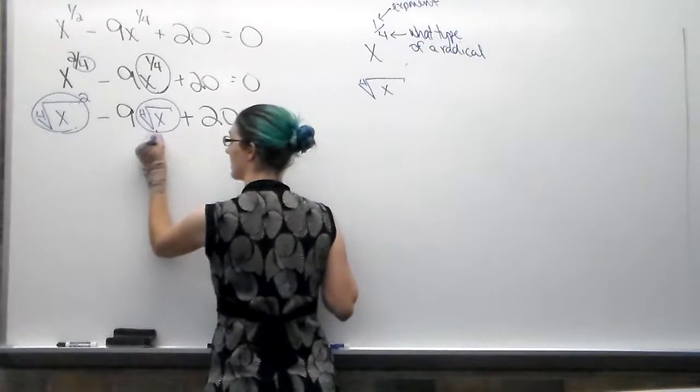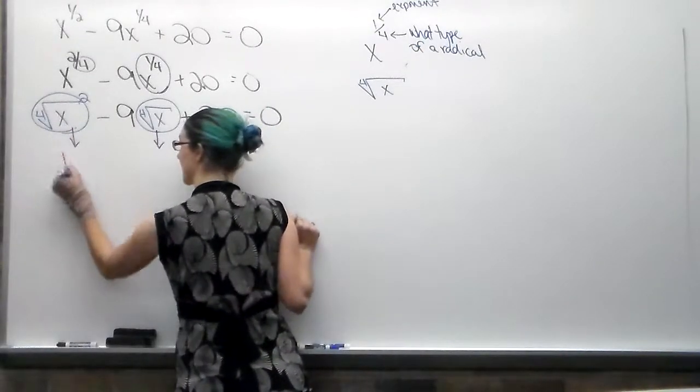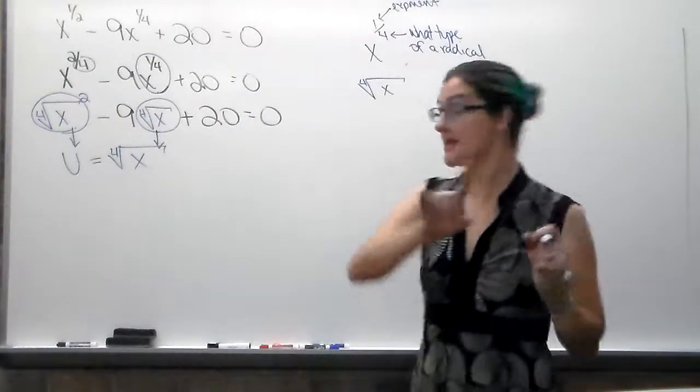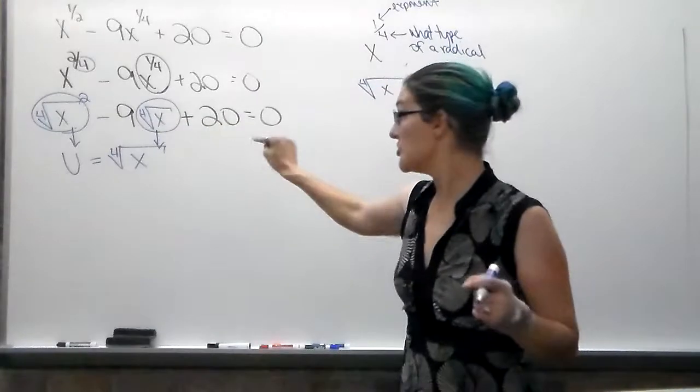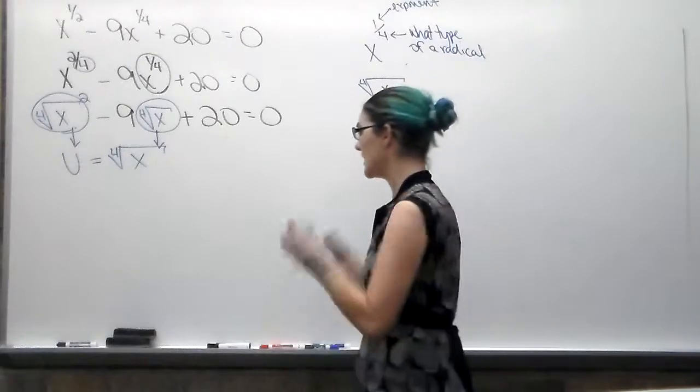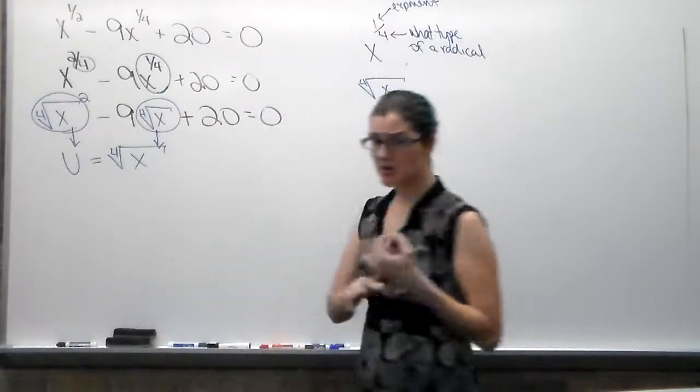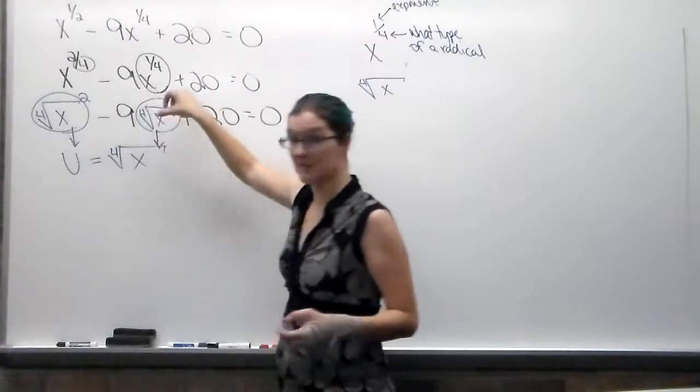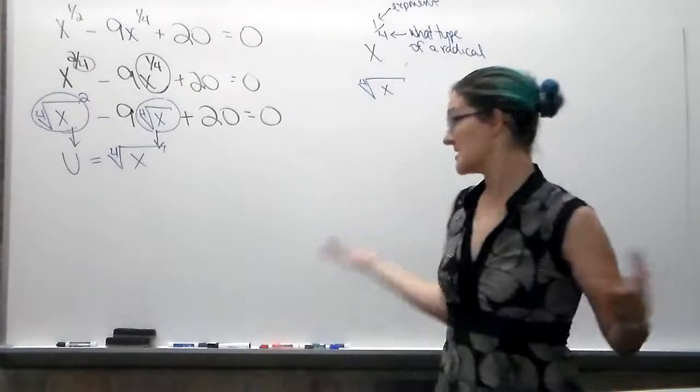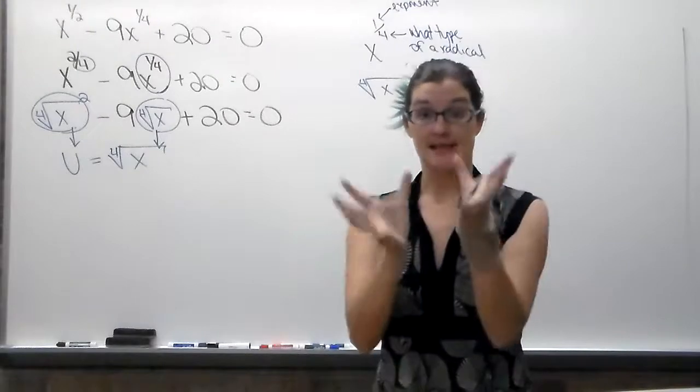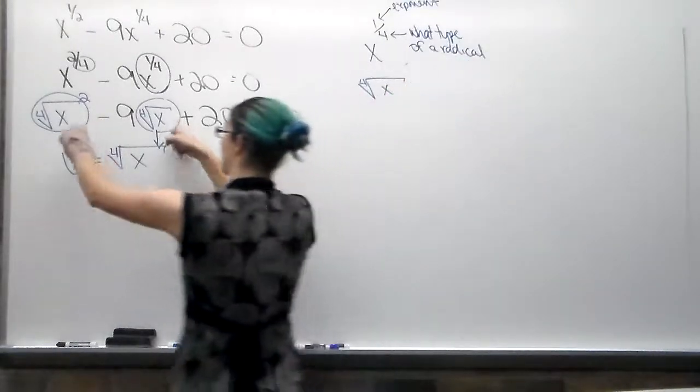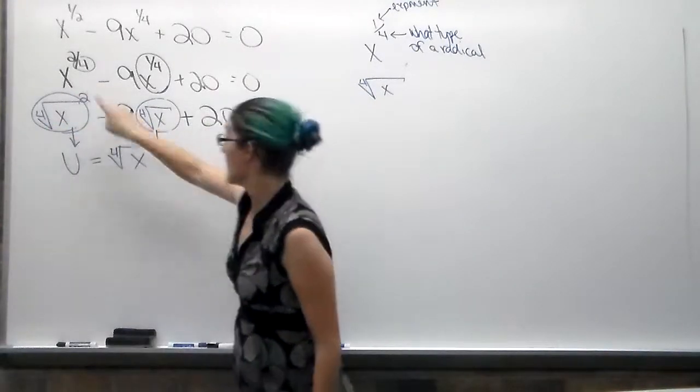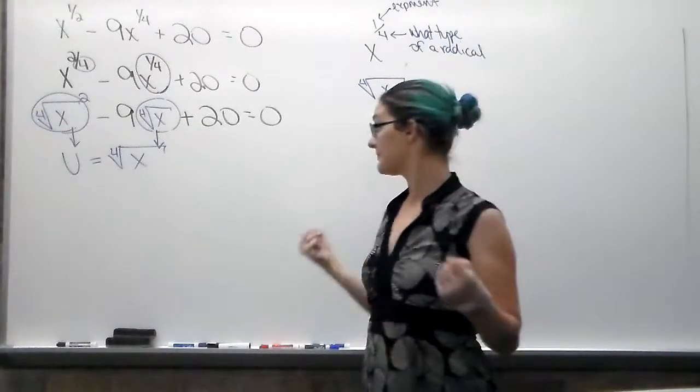So I'm going to take these radicals and say let u equal the fourth root of x. Now, you can only equal one thing. So if those radicals aren't the same, you can't let u equal it. But it's got to be the same. You can do it with radicals, with different exponents other than your two. If you have something that could be squared and something there, you could take and let u equal x to the fifth maybe. You could take u and let it equal a set of parentheses with stuff inside of it. The key is whatever you have has to be in both terms. The first one needs to be something squared, and the second one just needs to be whatever you're trying to take out.